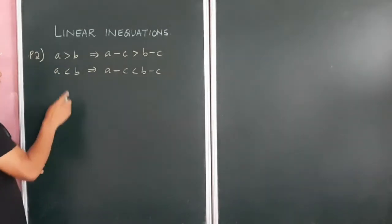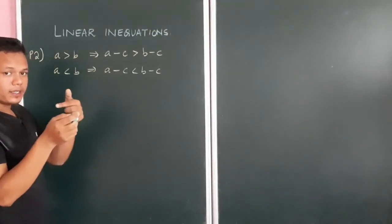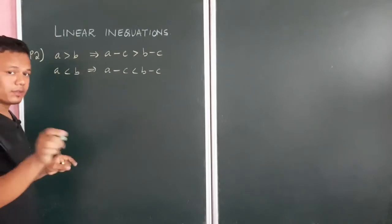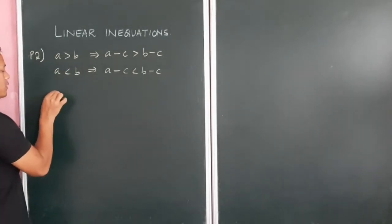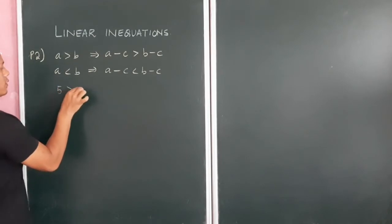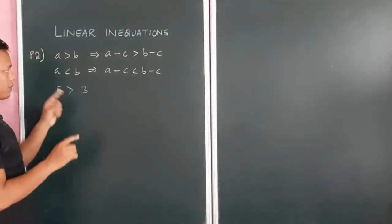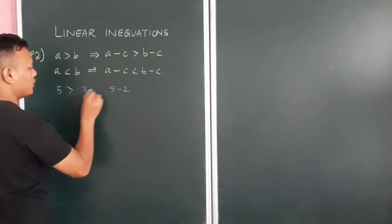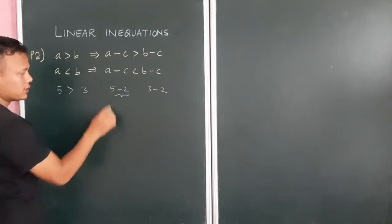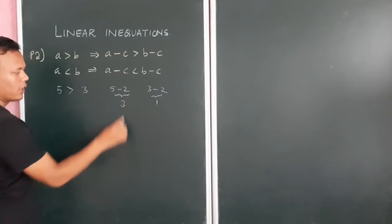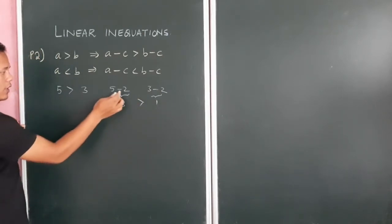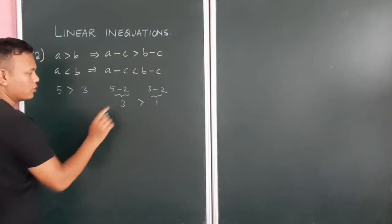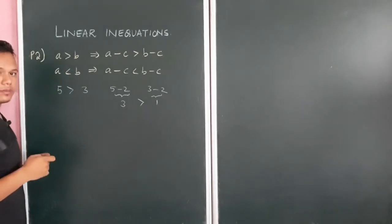Property 2: if you subtract the same number from both sides, the sign still remains the same. For example, 5 > 3 — subtract 2 from both sides: 5 - 2 = 3 and 3 - 2 = 1, and 3 > 1. The sign has not changed. So subtracting the same number from both sides of an inequality does not affect the sign.